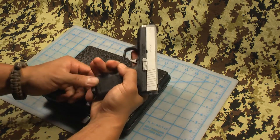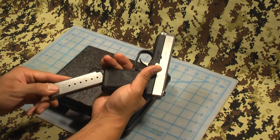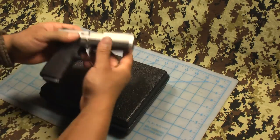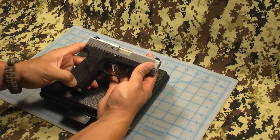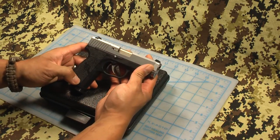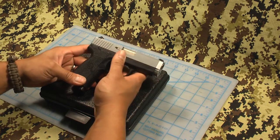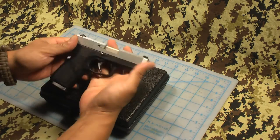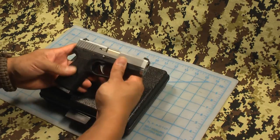It is really thin because it is a single stack magazine. This is about the same size as a Springfield EMP that is also chambered in 9mm. But obviously this is going to be a lot lighter being that it is polymer framed.